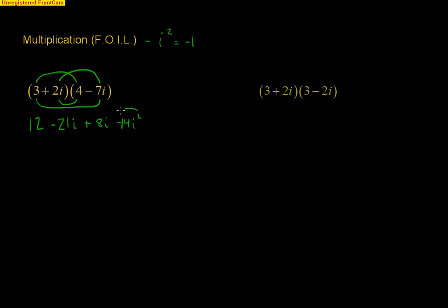So, right here, that i squared you know is a negative 1. So, that's going to turn this into a positive 14. And then, you've just got to make sure that you combine all of your like terms. So, first off, the 12 and the 14, that's going to give you 26. And then, negative 21 and the 8 for the i terms, that's going to be a negative 13i.